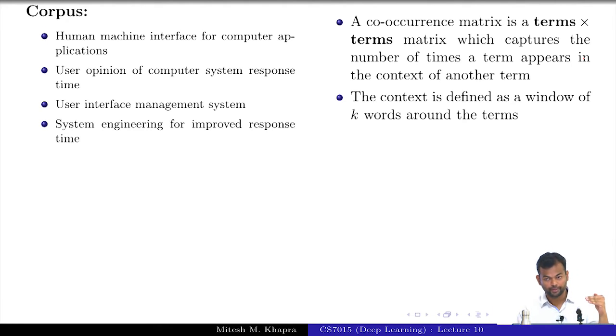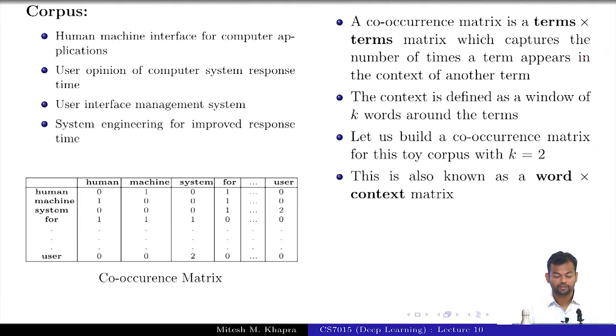I look at the first word which is human, and in that cell I enter the value which is the number of times human appeared in a window of k words around machine. That is how I will construct this co-occurrence matrix when I have taken the window size as 2. That means in any given cell, my entry would be the number of times human appeared within a 2-word window of machine. This tells me that user actually appeared 2 times around the word system in a window of 2 words around it.